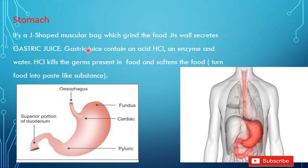What is the function of gastric juice or HCl? It kills the germs present in the food, softens the food, and turns the food into a paste-like substance.